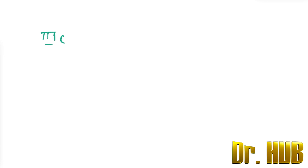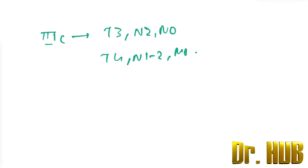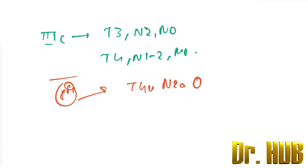Stage 3C in the 7th edition is T3, N2, M0 and T4, N1 to N2, M0. In the 8th edition, Stage 3C is T4A, N2A, M0 and T3 to T4A, N2B, M0.